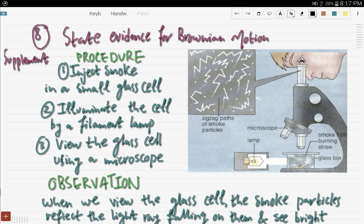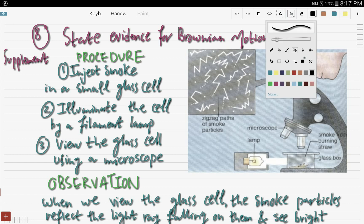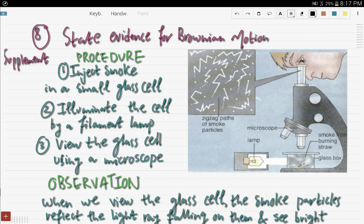And that is state the evidence for Brownian motion. So let's start by the procedure. So we need to carry out an experiment to provide an evidence for the Brownian motion. So the procedure is first inject smoke particles in a small glass cell, number two, illuminate the cell by a filament lamp, and number three, view the glass cell using a microscope.